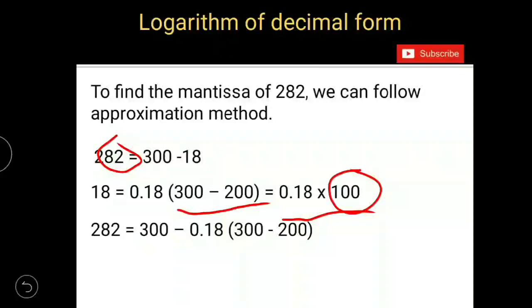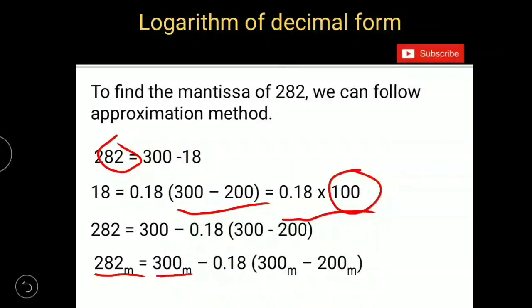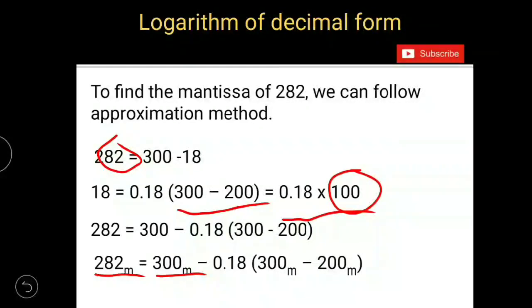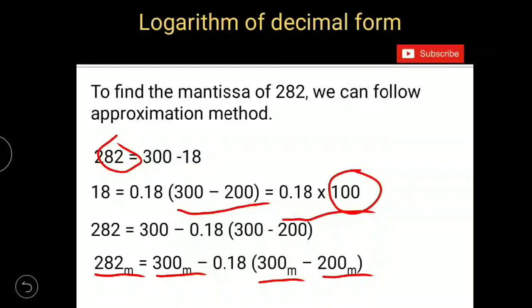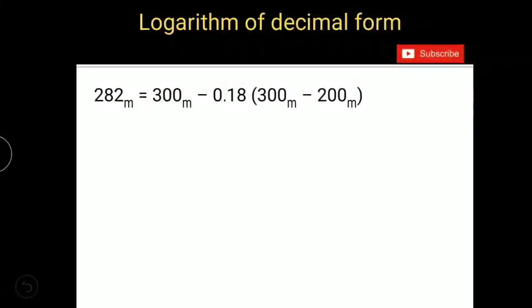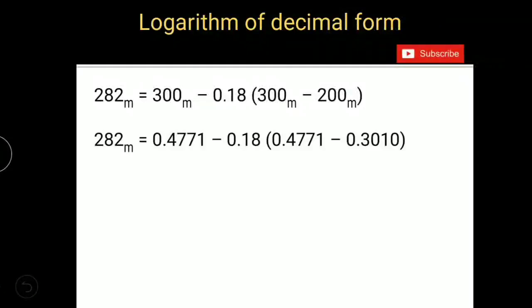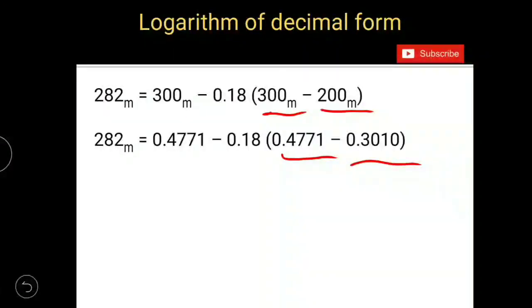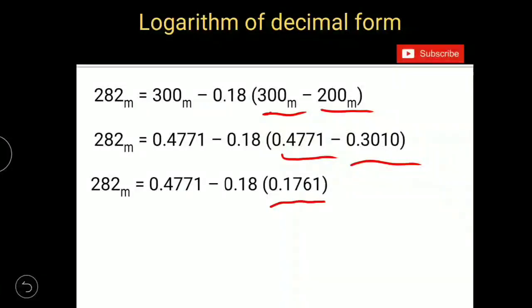So 282 equals 300 minus 0.18 into 300 minus 200. Using the same equation, we will find out mantissa of 282. Mantissa of 282 equals mantissa of 300 minus 0.18 into mantissa of 300 minus mantissa of 200. 300 mantissa is 0.4771, 200 mantissa is 0.3010. The difference between them equals 0.1761.